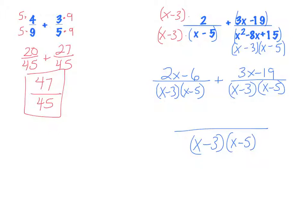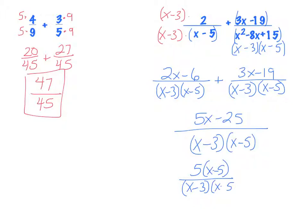Combining like terms: 2x and 3x gives 5x, and negative 6 and negative 19 gives negative 25. So the numerator is 5x minus 25. Check if it factors — and it does! Pull a 5 out to get 5 times x minus 5. On the bottom I have x minus 3 and x minus 5. The x minus 5 in the numerator matches the x minus 5 in the denominator, so I cancel them, and my final answer is 5 over x minus 3.